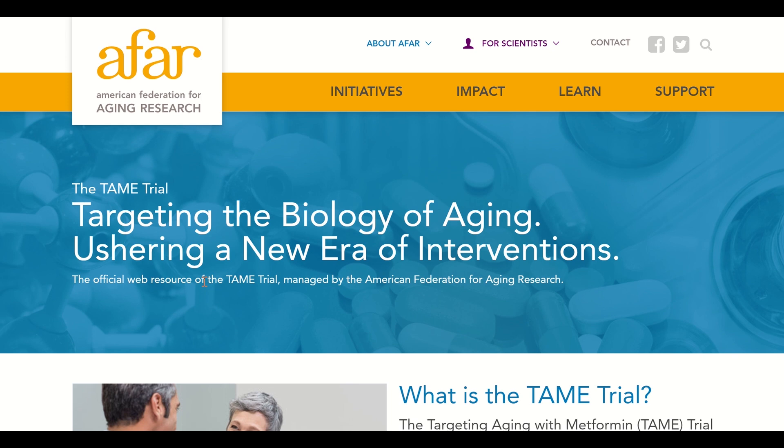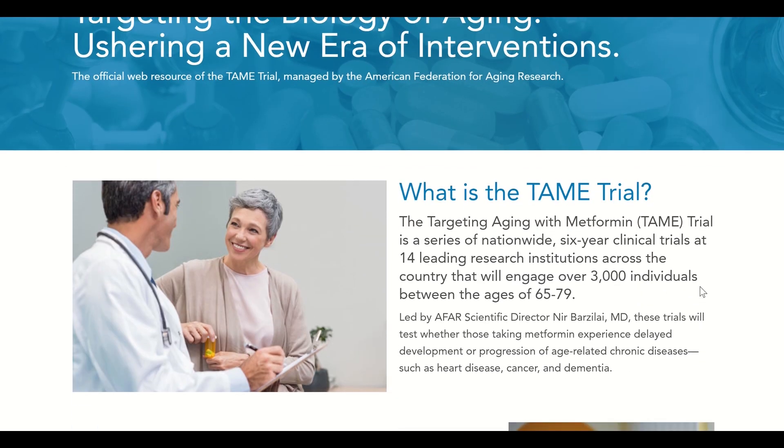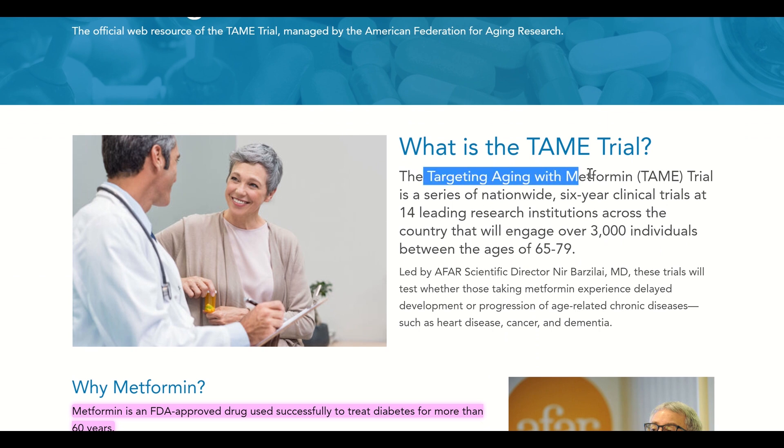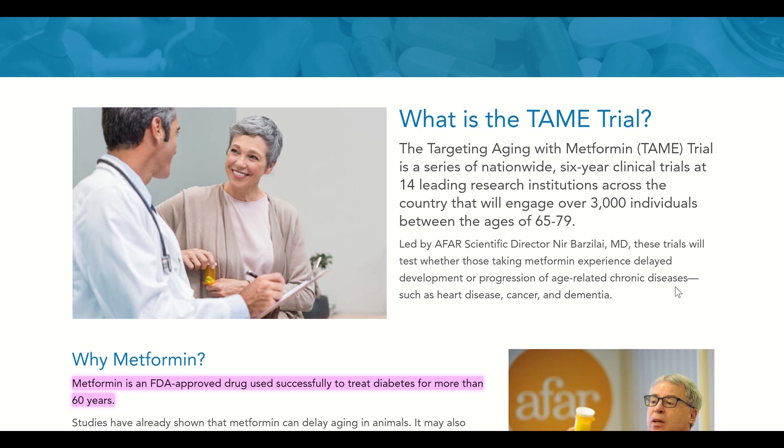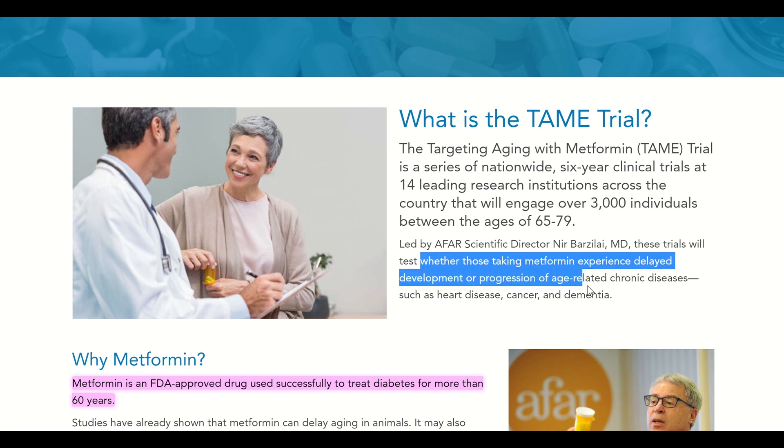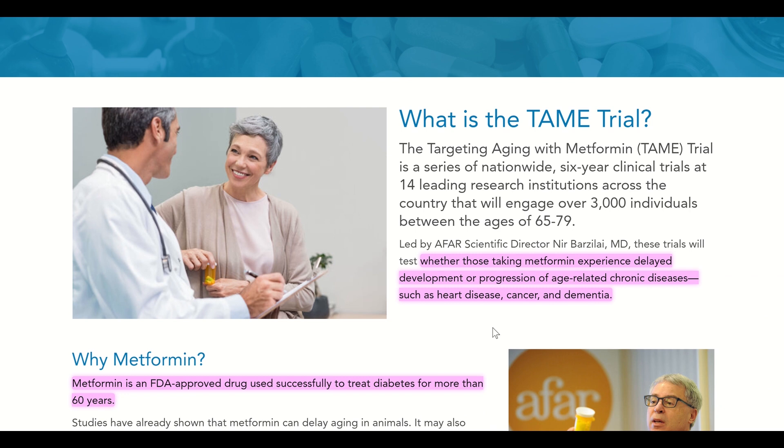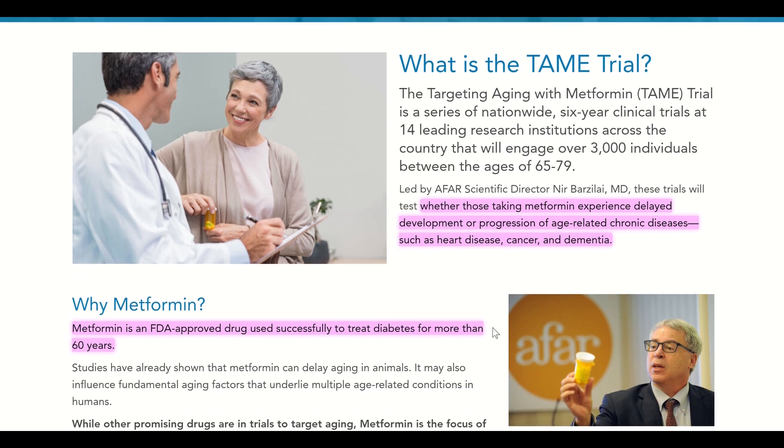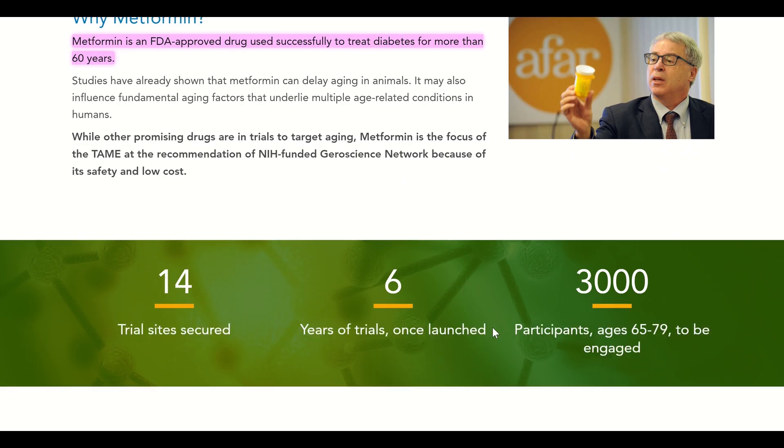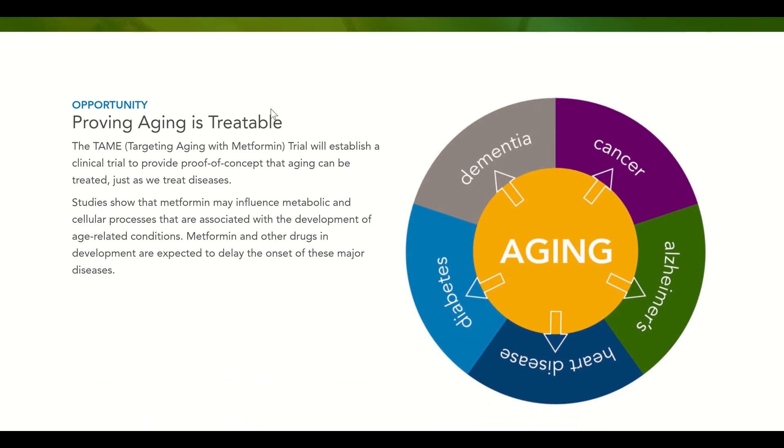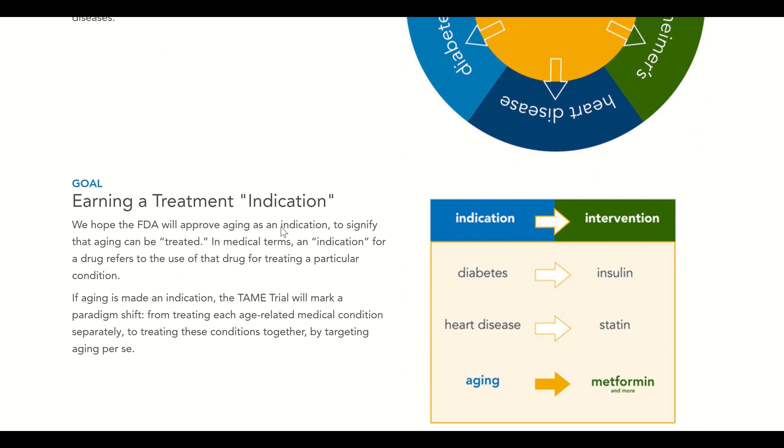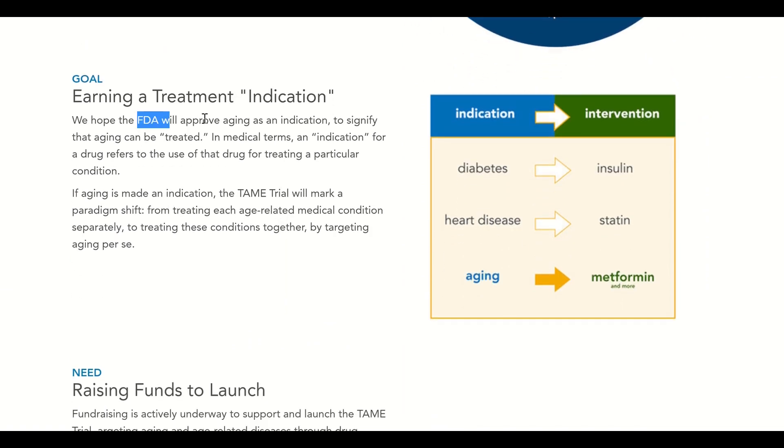Now the main reason that metformin is on my top five list is because of the Targeting Aging with Metformin trial, that is a planned 6-year clinical trial at 14 leading research institutions across America that will engage over 3,000 individuals between the ages of 65 to 79. And the idea is in this trial, they're going to test whether those taking metformin experience delayed development or progression of age-related chronic diseases such as heart disease, cancer, and dementia. And so this would give us a really good insight into whether or not metformin could actually try and improve health span and reduce the onset of different morbidities.